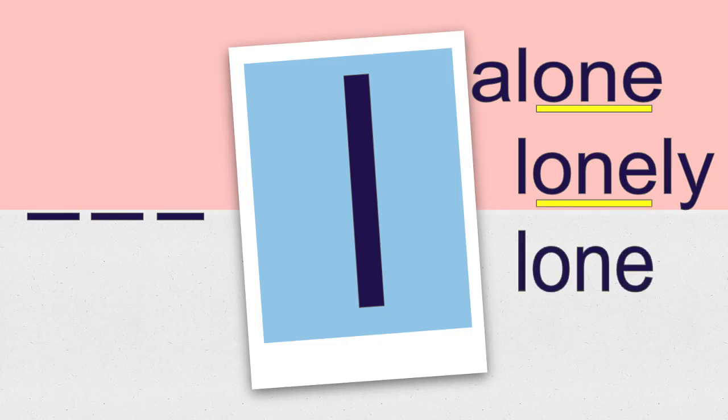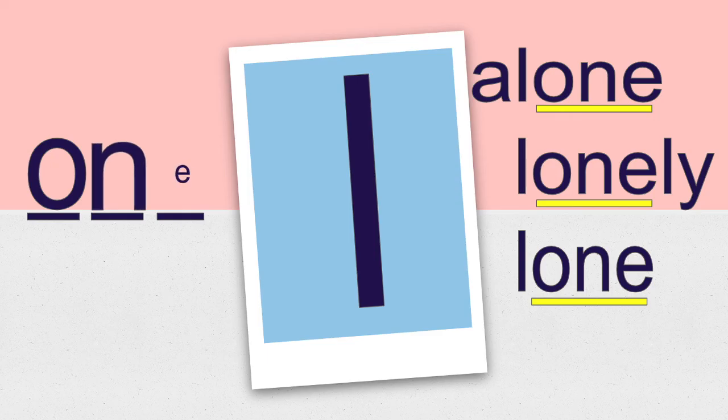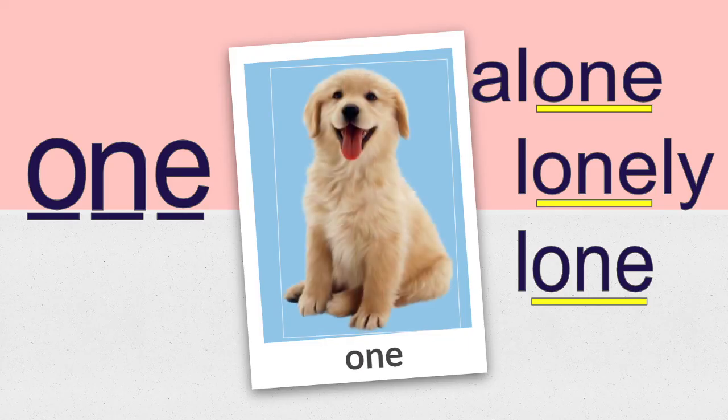Let's take a look at the number one. One has three letters in it and kind of a strange spelling. You can find the spelling for one in the word alone, the word lonely, or the word lone. One is spelled O, N, E. O, N, E spells the word one, just like there's one cute puppy dog here.